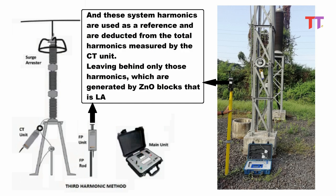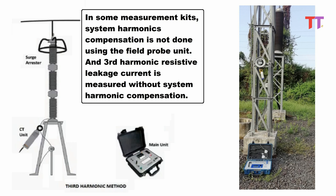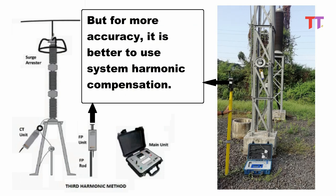These system harmonics are used as a reference and are deducted from the total harmonics measured by the CT unit, leaving behind only those harmonics which are generated by ZNO blocks, that is LA. In some measurement kits, system harmonics compensation is not done using the field probe unit, and third harmonic resistive leakage current is measured without system harmonic compensation. But for more accuracy, it is better to use system harmonic compensation.